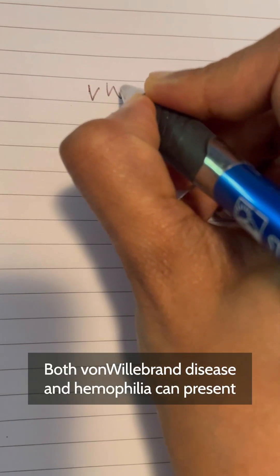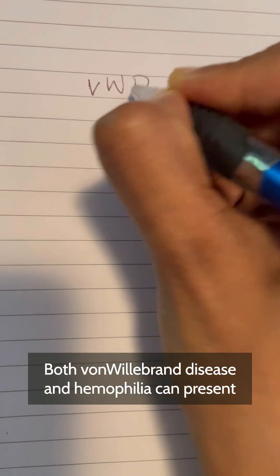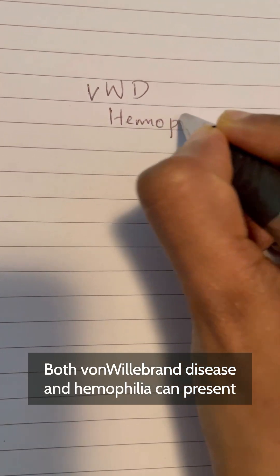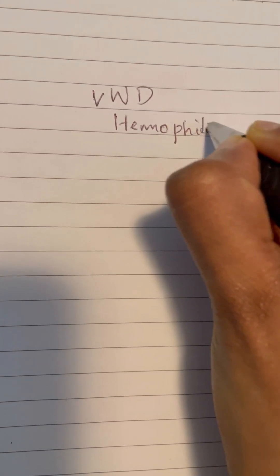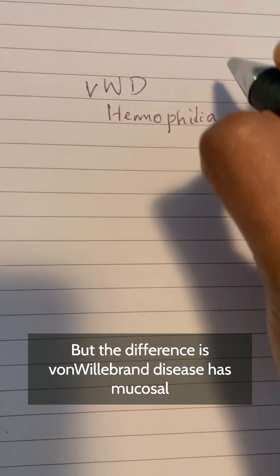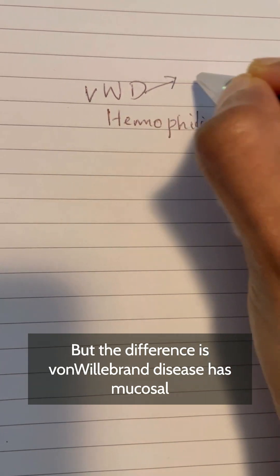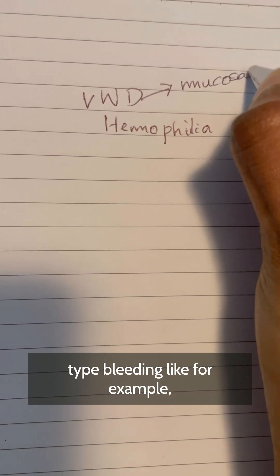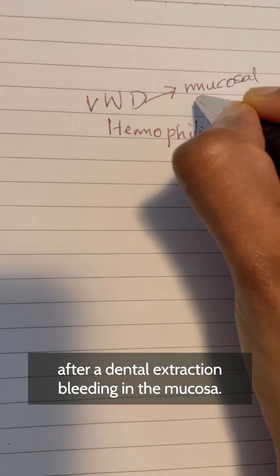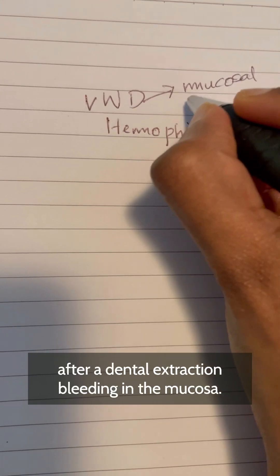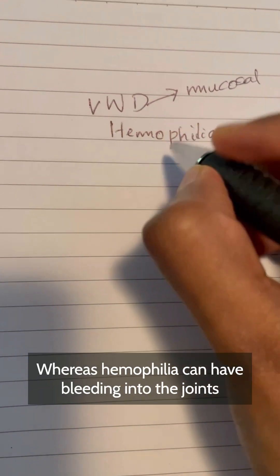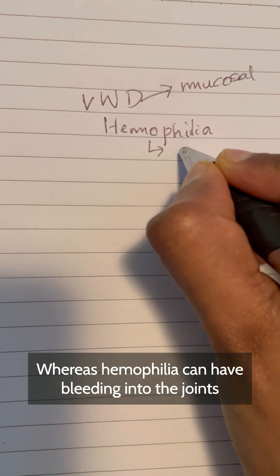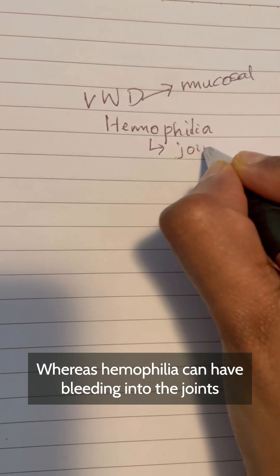Both von Willebrand disease and hemophilia can present with bleeding, but the difference is von Willebrand disease has mucosal type bleeding — for example, bleeding after dental extraction or bleeding in the mucosa — whereas hemophilia can have bleeding into the joints and muscles.